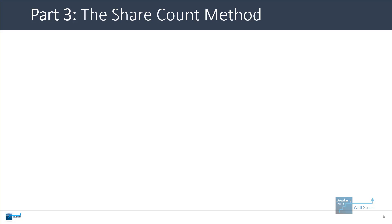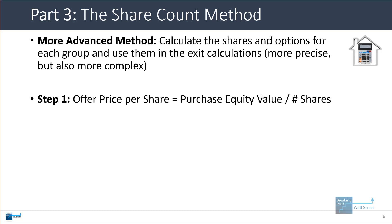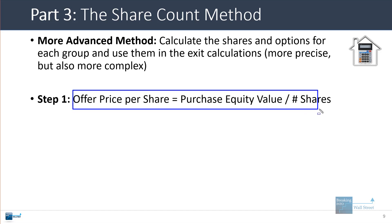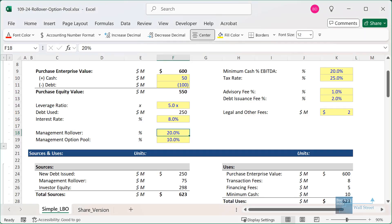Now let's go into the more complex method. In more complex models, you will often calculate the share count in the deal, look at the actual shares owned by each group and the options owned by each group, and then use them in the exit calculations. This is more precise and accurate, but adds some complexity to the model. If you're doing this, you have to start with the offer price per share in the initial deal, because this is usually assumed to be the exercise price for the options granted to management as well.